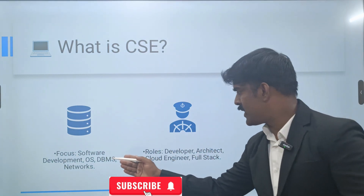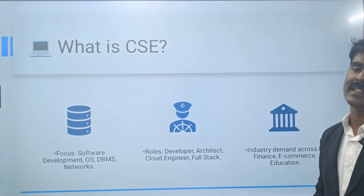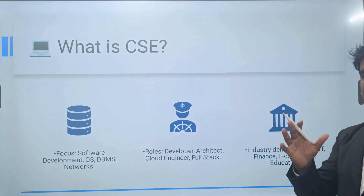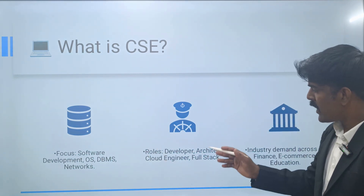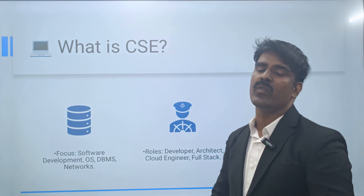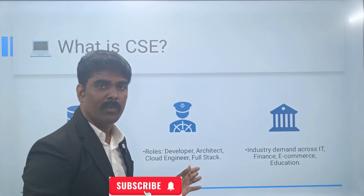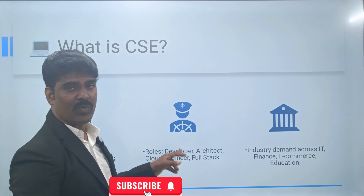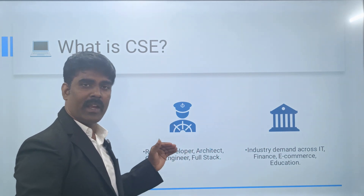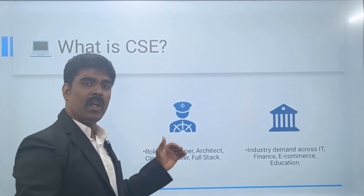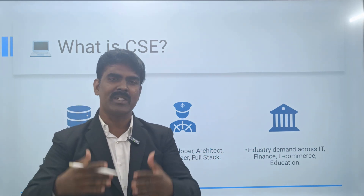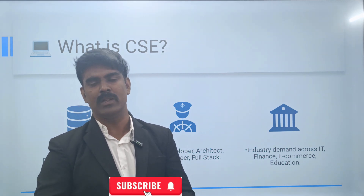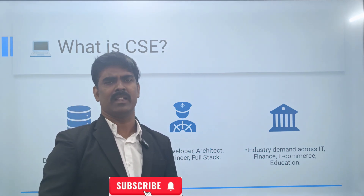What is CSE? What are the roles and industry demands? The main focus is software development, operating systems, database management, and networks. Once you complete four years of Computer Science Engineering, you can become a software developer, architect, cloud engineer, or full stack developer. These are the main roles. There are many subdivisions such as junior developer and junior engineer.